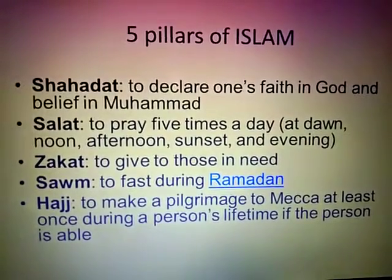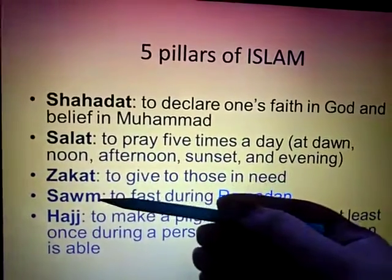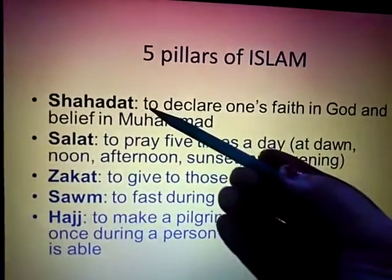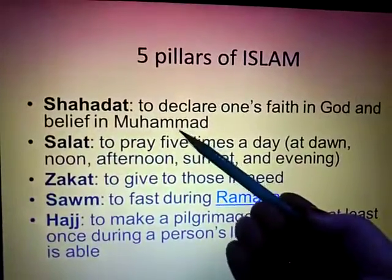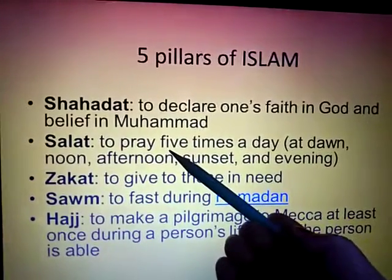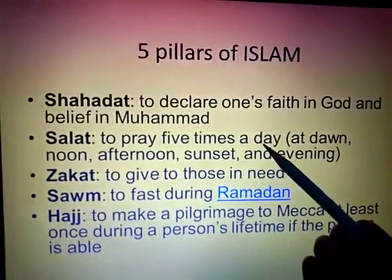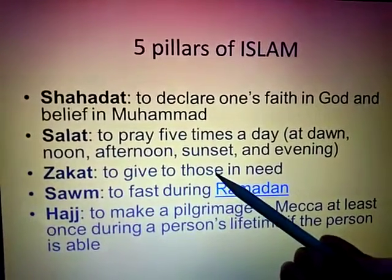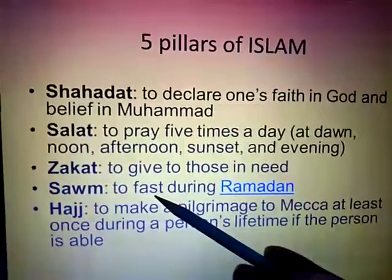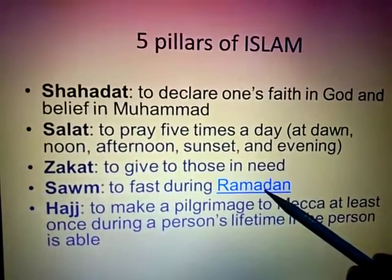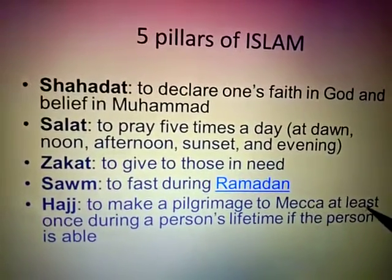There are basically five pillars of Islam. They are Shahadat, Salat, Zakat, Sawm, and Hajj. The first one declares one's faith in the Almighty God and to believe in Muhammad. The second one asks a person to pray five times a day. Then to give to those who are in need, to keep a fast during the holy month of Ramadan, and that everyone should have a pilgrimage to Mecca at least once in a lifetime.